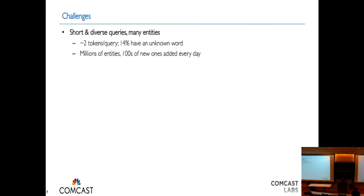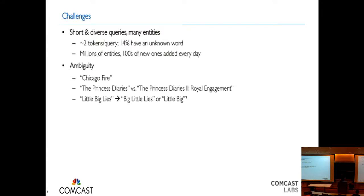There are some challenges specific to this domain. First, queries are shorter and more diverse compared to other domains — on average, a bit less than two tokens per query. The space is very entity-heavy with lots of entities in the catalog. It's also very dynamic: every day hundreds of new shows or episodes are added and others get removed. We found 14% of queries had at least one unknown token, which seems very high — unknown to the embedding we're using.